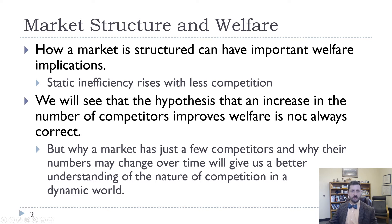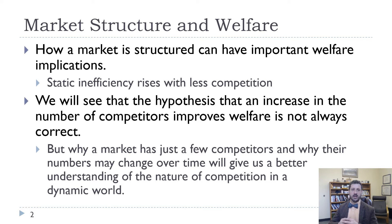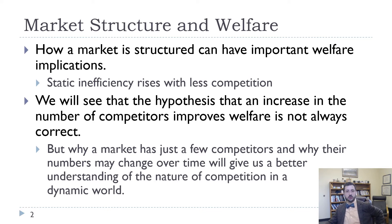One of the things we want to think about is how market structure is related to efficiency and social welfare. Static inefficiency rises with less competition. With perfect competition there's no deadweight loss, but with monopoly there is deadweight loss, and we want to see if that continues with oligopoly. We want to see whether regulations can improve social welfare and whether increased competition will actually improve social welfare. We'll see that different models of oligopoly have different results there.